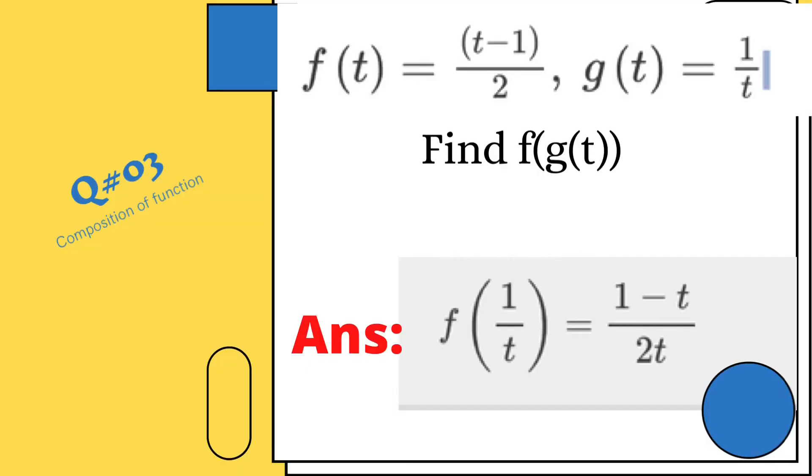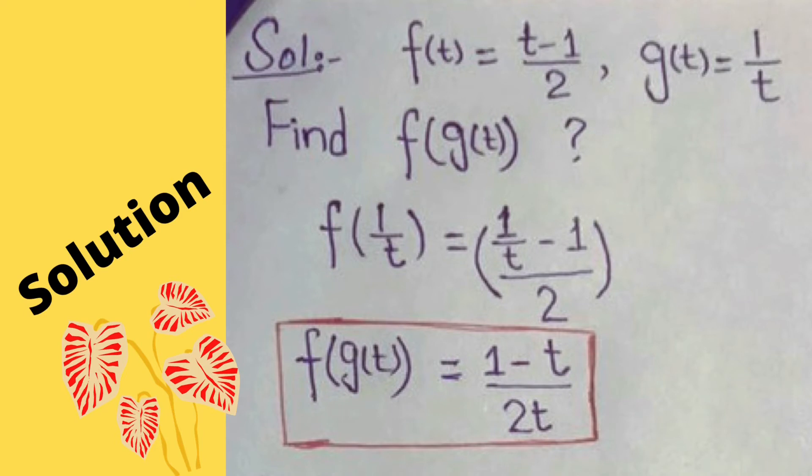Question number 3: f(t) = (t-1)/2 and g(t) = 1/t. We have to find the composition of functions f(g(t)), which is given as (1-t)/2t. You can check the solution here. For f(g(t)), we put the value of g(t), which is 1/t, and after that we apply the composition and get the answer (1-t)/2t. These questions basically...